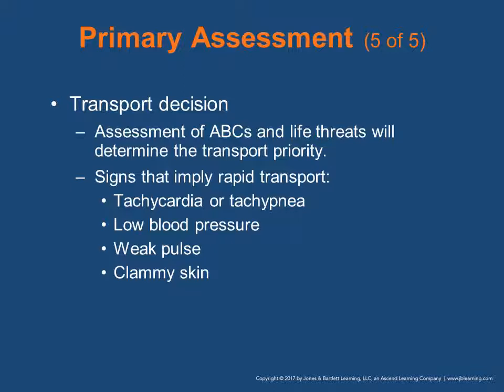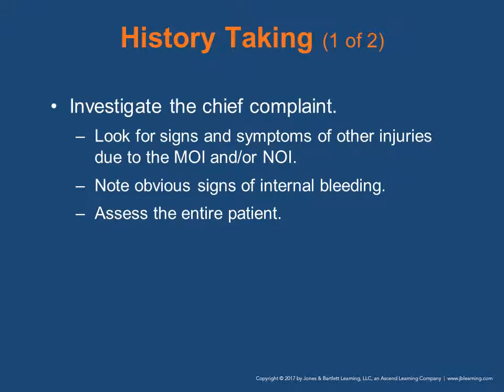Your transport decision: assessment of ABCs and life threats will determine transport priority. Signs implying rapid transport include tachycardia or tachypnea, low blood pressure, weak pulse, and clammy skin. Investigate your chief complaint — look for signs and symptoms or other injuries due to mechanism or nature of illness. Look around the scene: what do you see besides where you find the patient? Take a peek for open bottles — even something as simple as Pepto-Bismol, because we recently had a salicylate overdose where the patient was drinking Pepto-Bismol, which is high in salicylates. Think outside the box. If something looks odd, make a note of it.